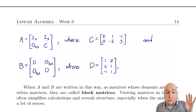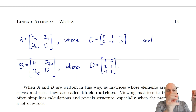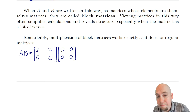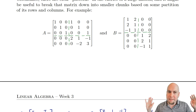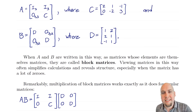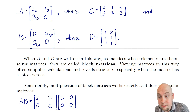It turns out that a really miraculous thing happens when you do this — everything just works how you would hope. You can multiply block matrices together and get the right answer. So let's multiply A and B together using block form rather than the long way. Doing it the long way means multiplying a five-by-six matrix by a six-by-four matrix, which is ugly by hand. Instead, I'll take the block matrix forms and multiply them together.